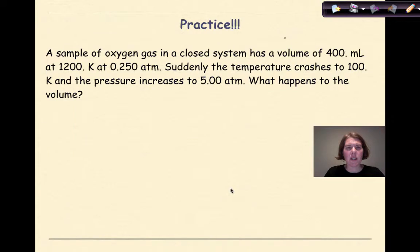Welcome back. Let's see how you did. A sample of oxygen gas in a closed system has a volume of 400 milliliters at 1200 K at 0.25 atm. Suddenly the temperature crashes to 100 K and the pressure increases to 5 atm. What happened to the volume?